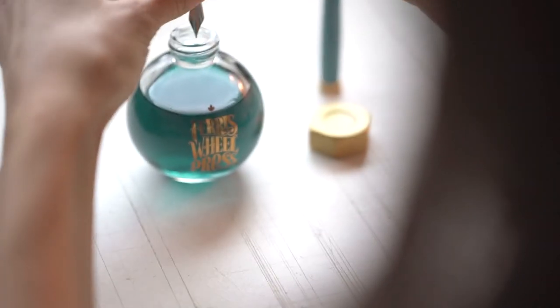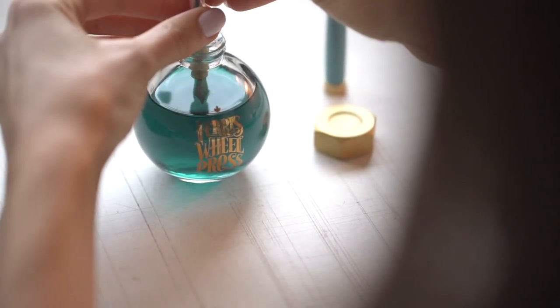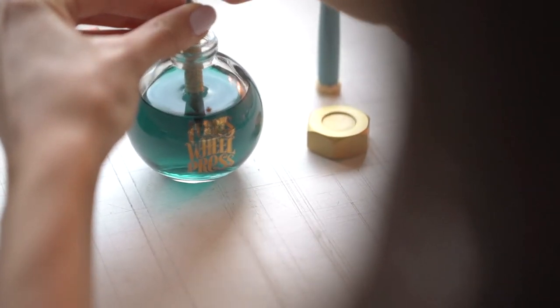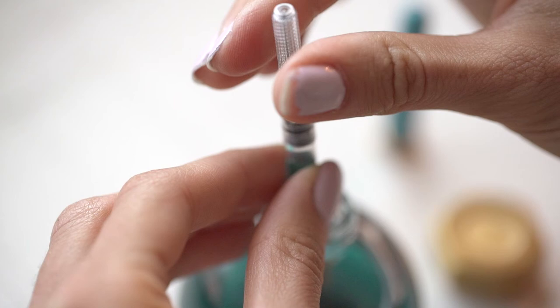Twist the end knob until the piston is fully depressed. Submerge the entire nib into the ink and slowly twist the piston to draw the ink until the converter is fully extended.